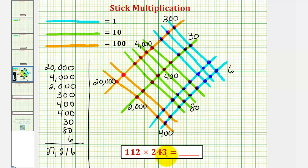So 112 times 243 equals 27,216. The values we see here when performing stick multiplication are actually the partial products of this product which we'll take a look at in our next example. I hope you found this helpful.